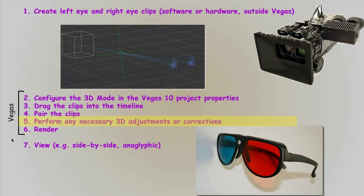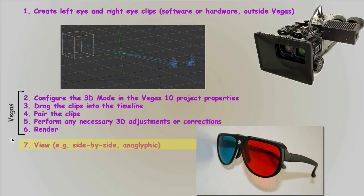When you create your left and right eye clips in software, it should seldom need any adjustments or corrections, because it's very easy to align your cameras perfectly. When you're using a physical camera or cameras, it depends what kind of camera and rig you've got and what happens during the shoot — in that case you may well need some adjustments or corrections. And finally, you render out your 3D and view it.